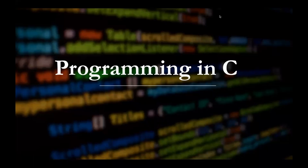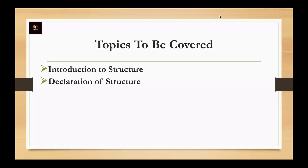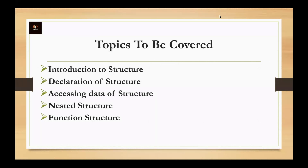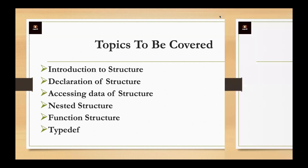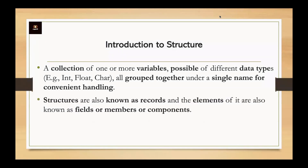In this video we are going to learn about structure in C. The topics covered include: introduction to structure, declaration of structure, accessing data from structure, nested structure, and functions. A structure is a collection of one or more variables of different data types — including integer, float, or char — grouped together under a single name for convenient data handling. Structures are also known as records, and their elements are known as fields or members.